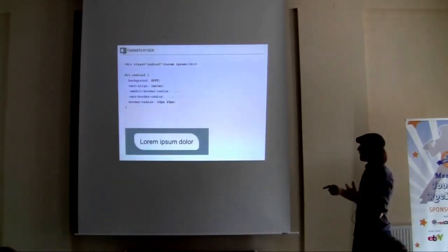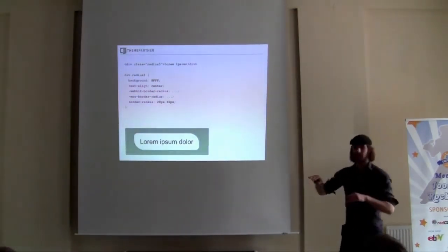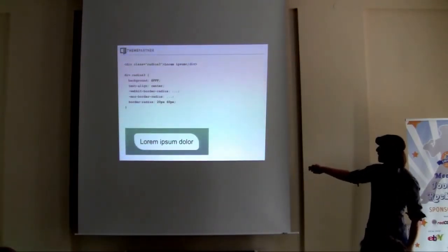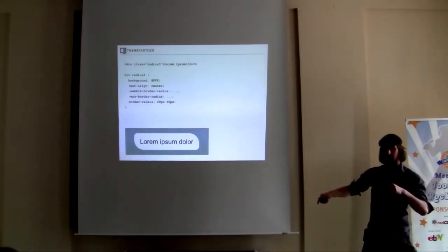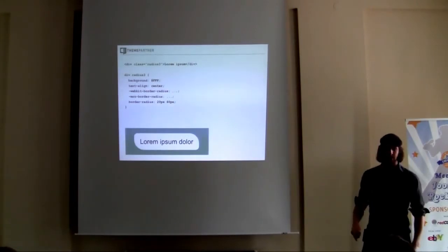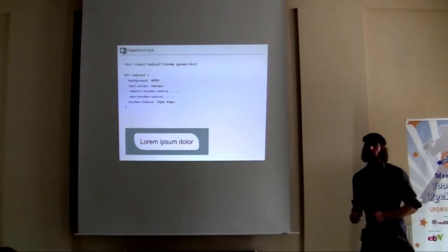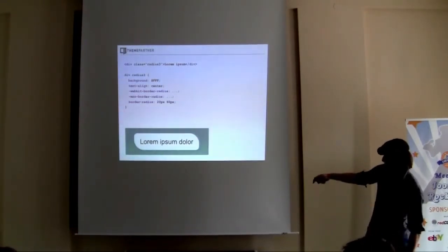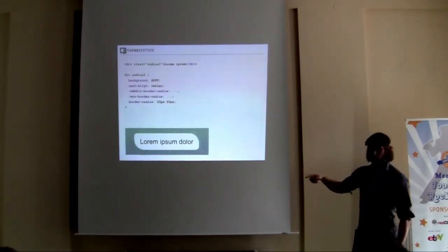You don't have to use the same border-radius on every corner — you can use different ones on every corner. I used a shorthand of 20 pixels and 60 pixels, which means top-left and bottom-right are 20, and the other corners are 60. If you want different ones for every corner, the order is top-left, top-right, bottom-right, and bottom-left.